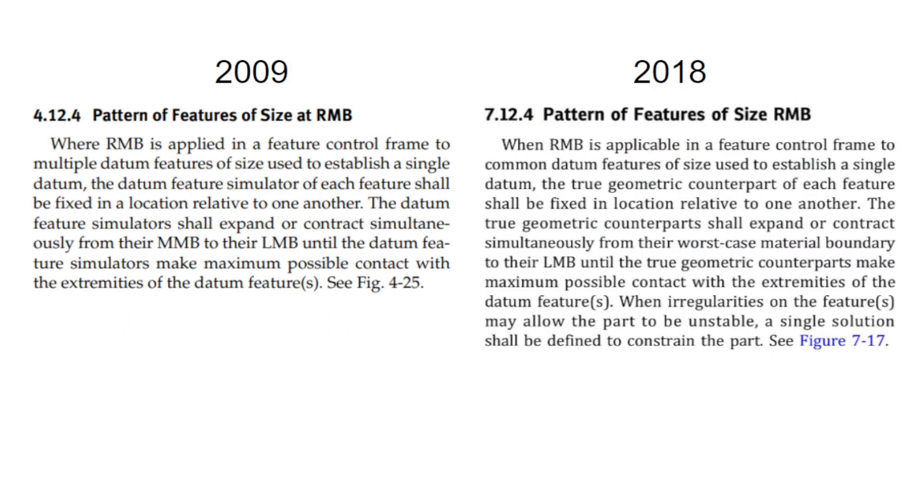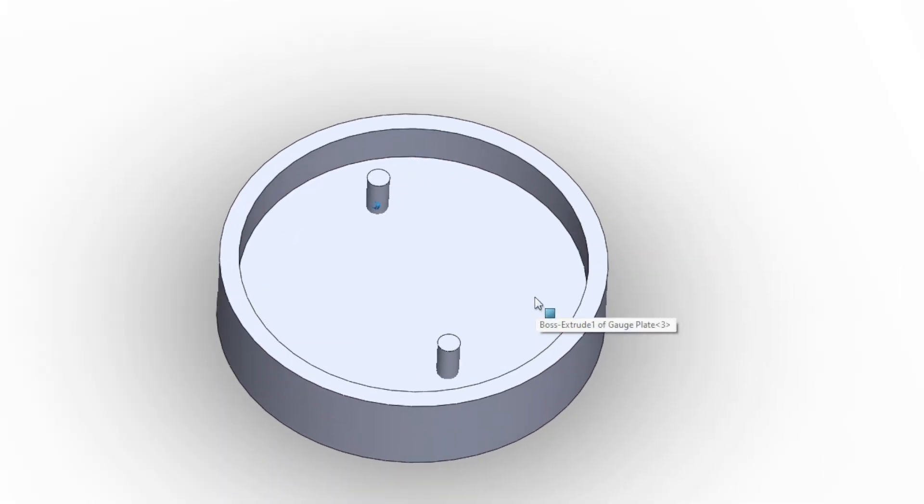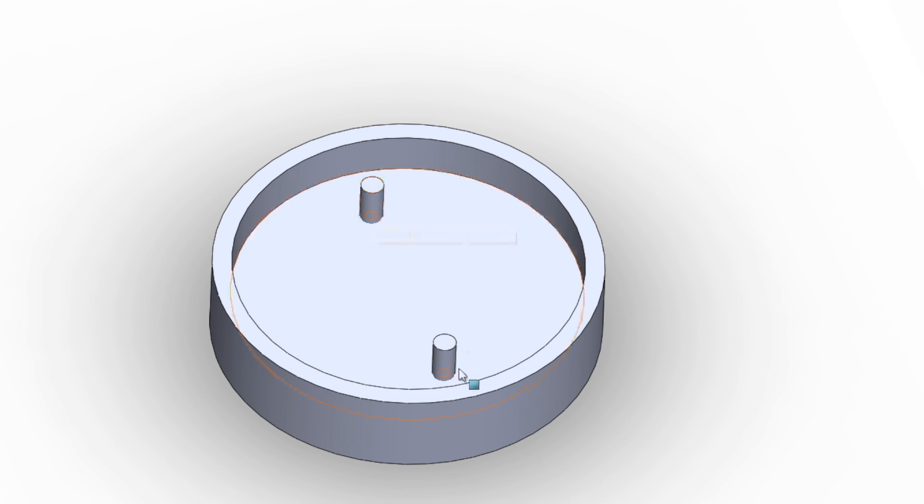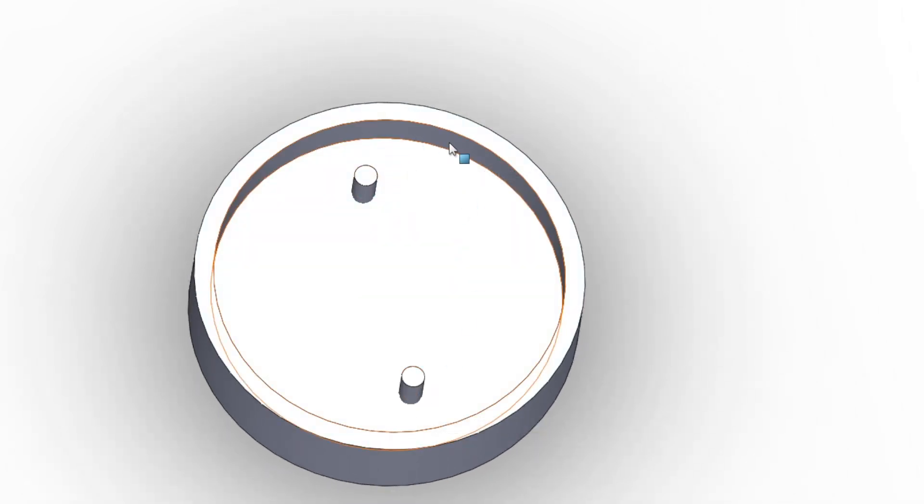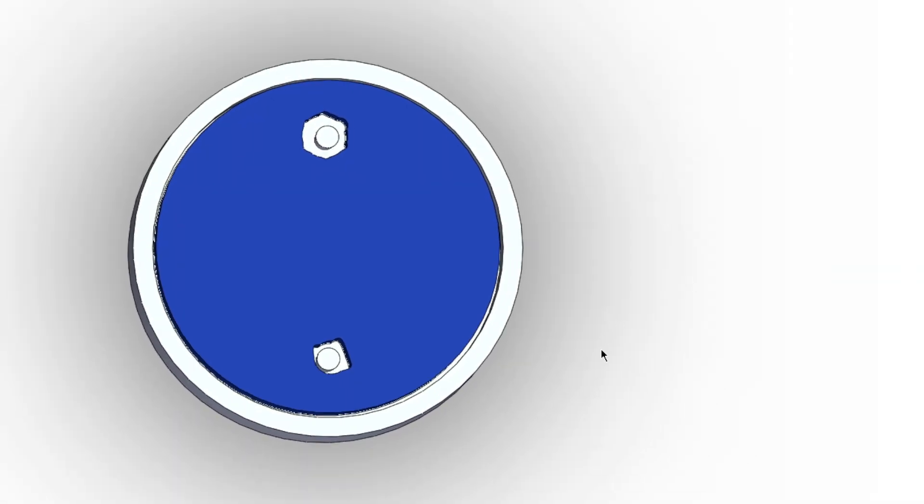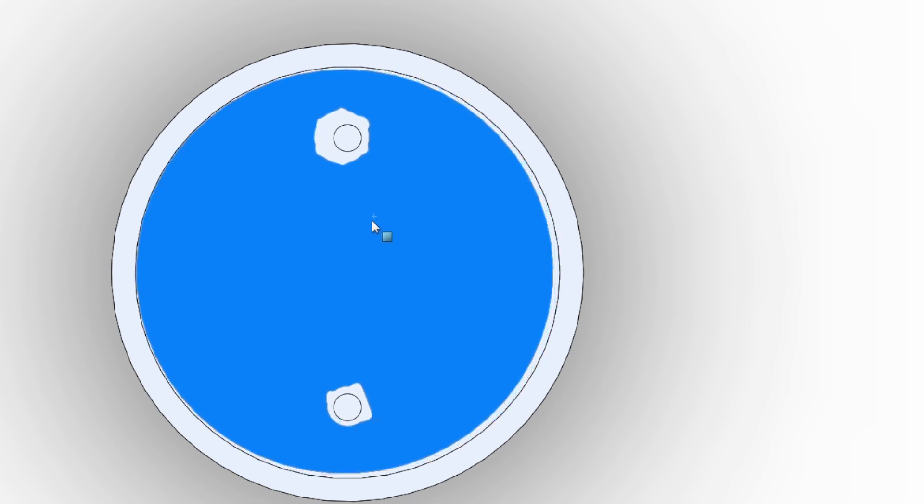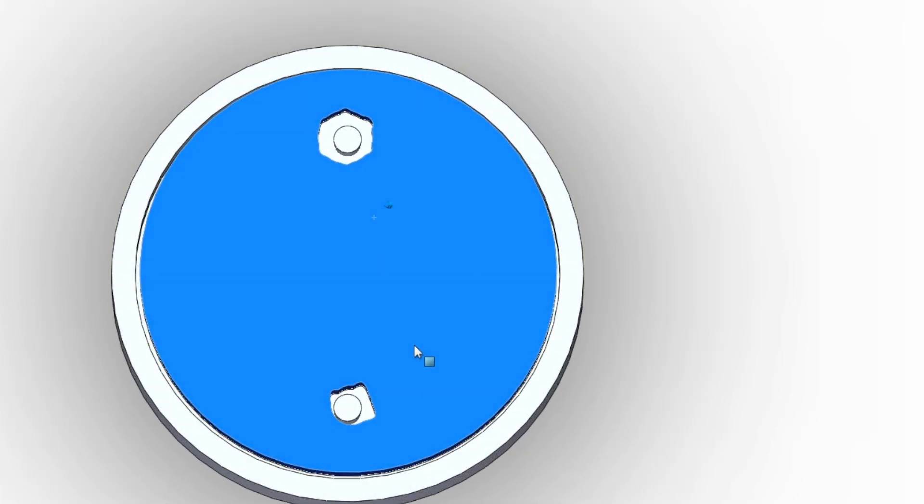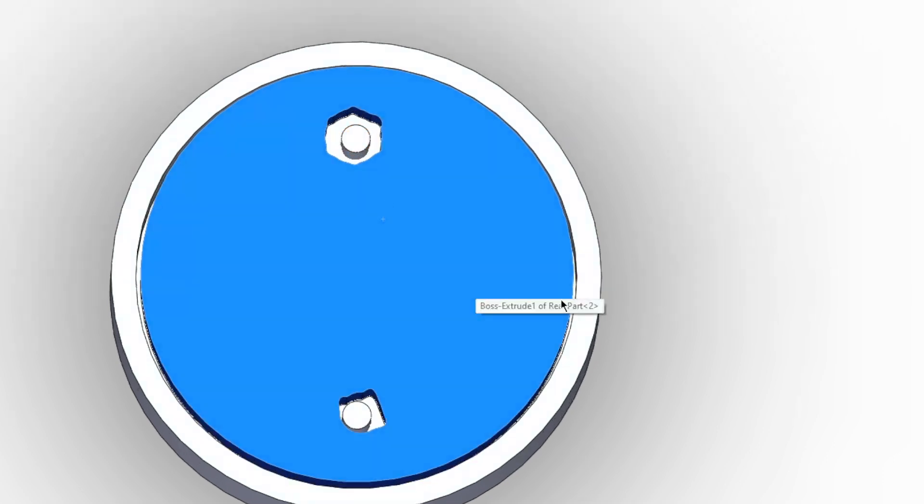Starting with the MMB case, this is what the gauge would look like. We'd have our virtual condition pins and our virtual condition outer ring, and everything would be spaced out by the basic dimensions. Then the part might look something like this. Looking at it from an MMB perspective, this would be able to sort of knock around, and as long as the part fit within the ring and over the gauge pins, this part would be considered a pass.